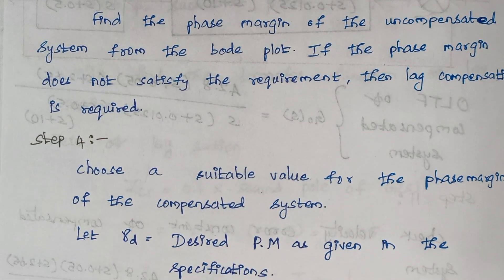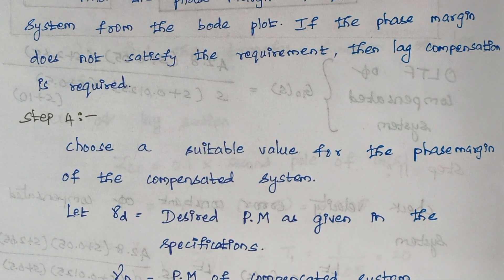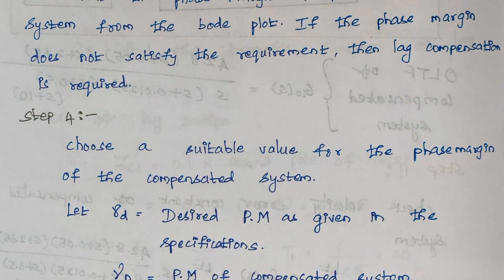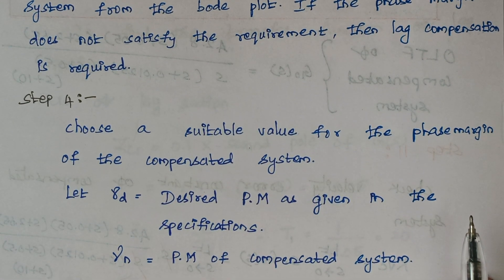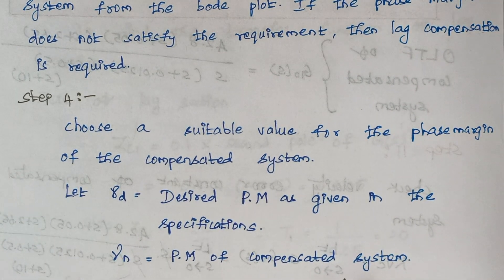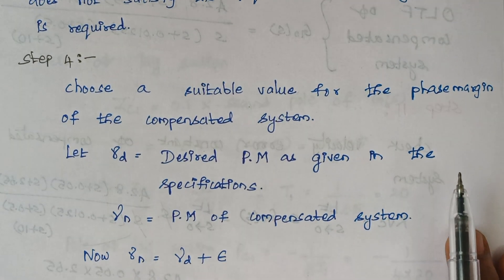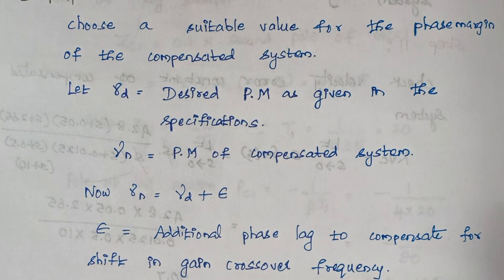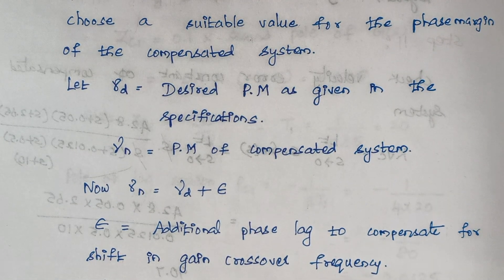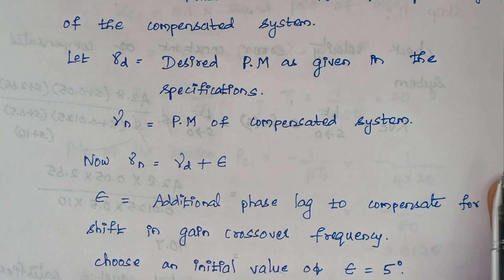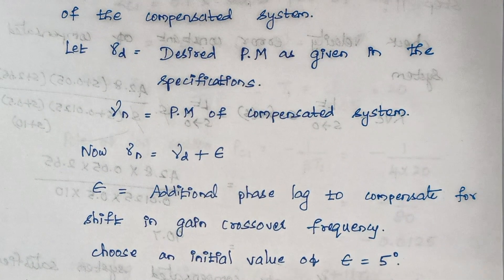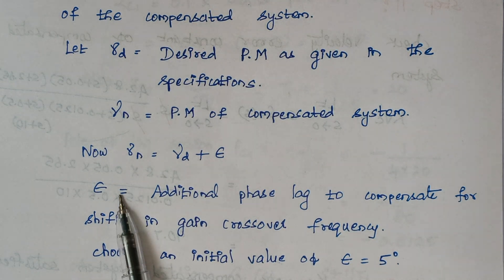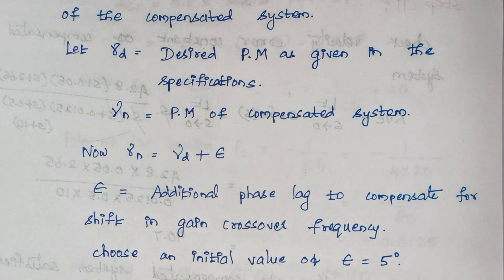Step 4 is to choose a suitable value for the phase margin of the compensated system. Here, gamma_D is the desired phase margin given in the problem, and gamma_N is the phase margin of the compensated system. The formula is: gamma_N = gamma_D + epsilon, where epsilon is the additional phase lag to compensate for shifting the gain crossover frequency. The initial value of epsilon is taken as 5 degrees.